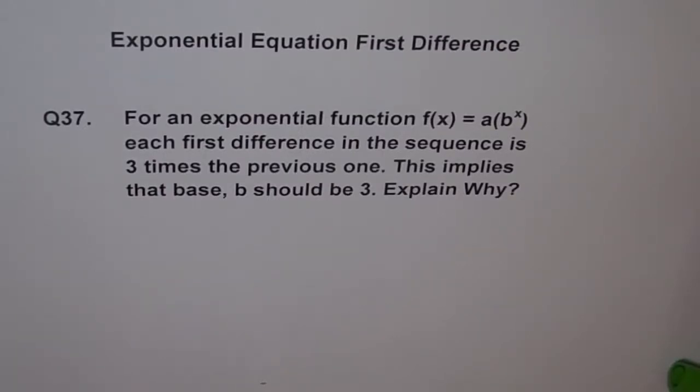Let's now understand the first difference in exponential equation. Question 37. For an exponential function f of x equals a b to the power of x, each first difference in this sequence is 3 times the previous one. This implies that base b should be 3. Explain why.